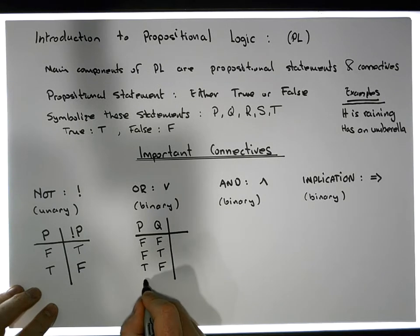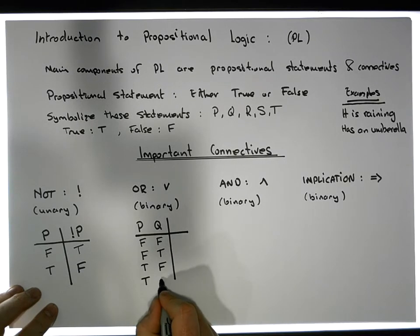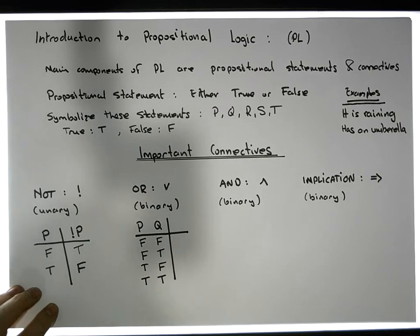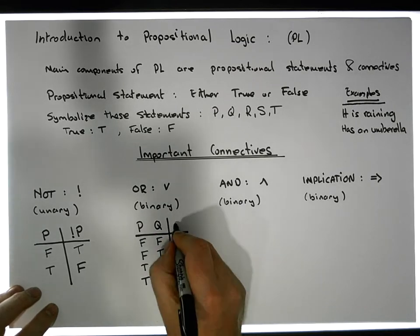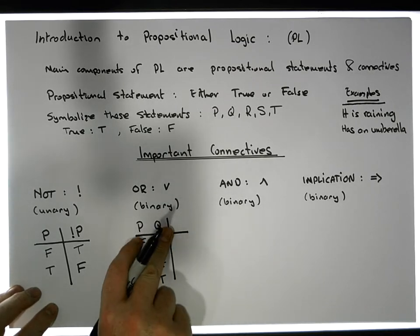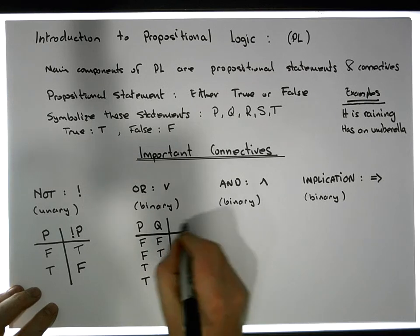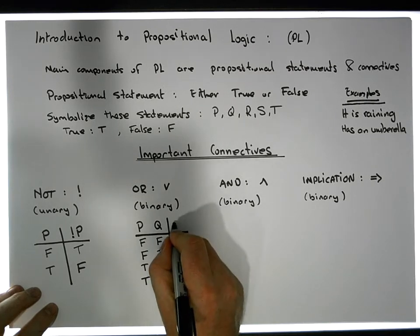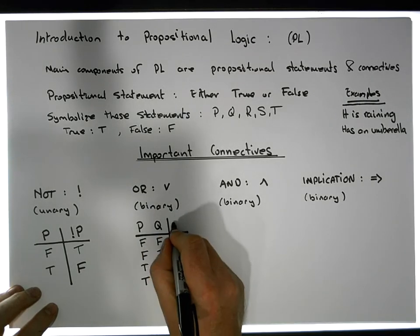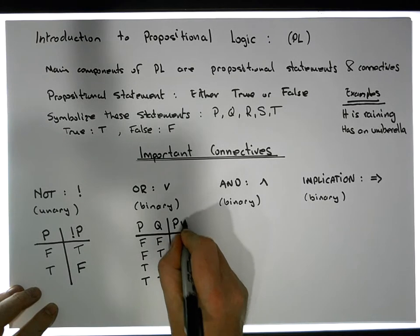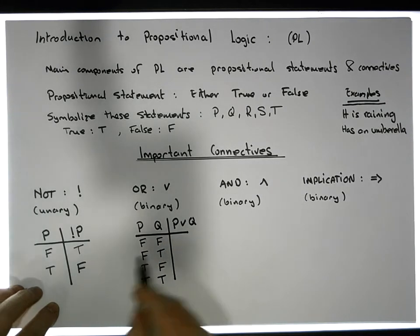And then the next possibility, the only other possibility, is that the first one is true, and the second one is true. The OR is an operation that's applied to two propositions. From a syntax perspective, when we OR'd P with Q, the output is P OR'd with Q.